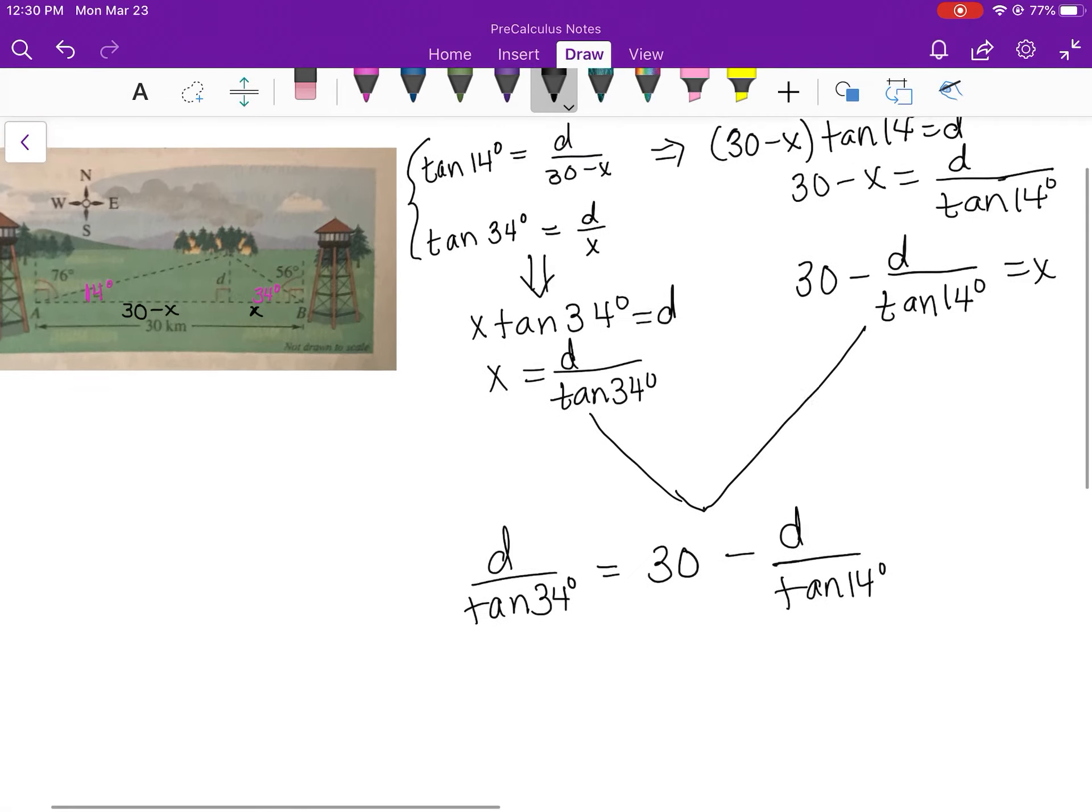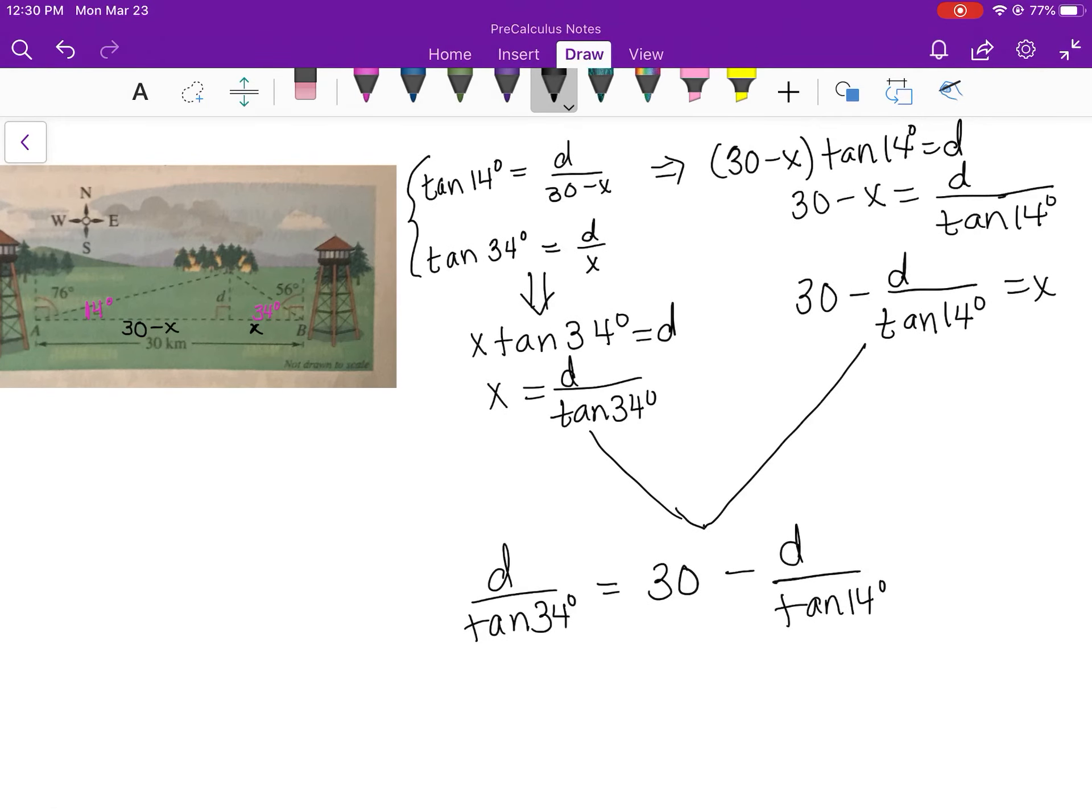Okay, what I want you to do now is to see if you can take it from here. I want you to go ahead and do this as one over the tangent of 34 degrees times D and one divided by the tangent of 14 degrees times D. Collect your like terms, solve for D, and see if you can find the distance.